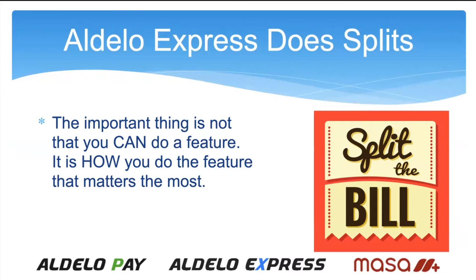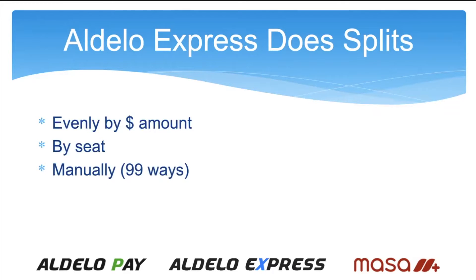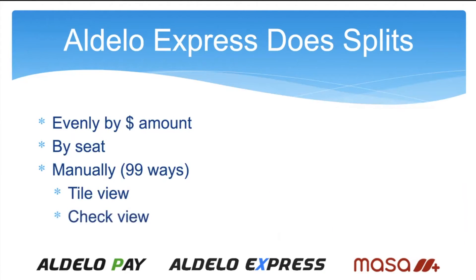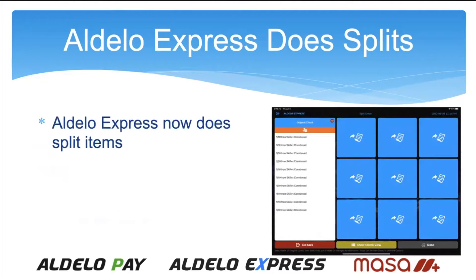Adelo Express does splits. We do them evenly by dollar amount. We do them by seat — if the order was entered by seat, we can do the splits by seat. We can do them manually up to 99 splits. We have the tile view and the check view — whichever you prefer — we can do splits of the check up to 99 different ways. But now we also do item split.